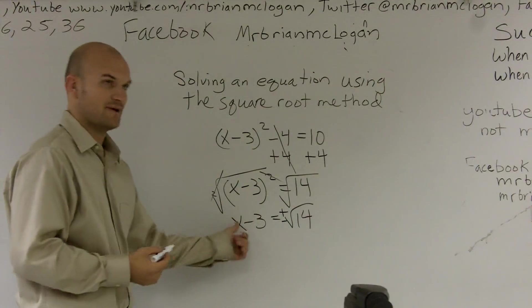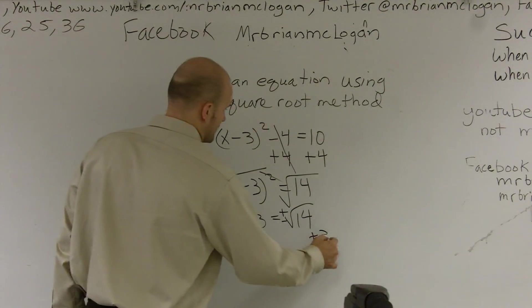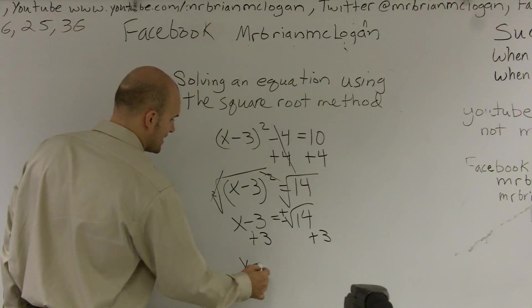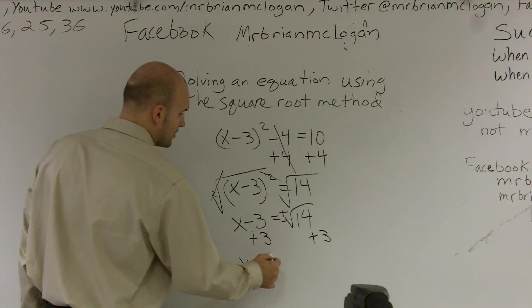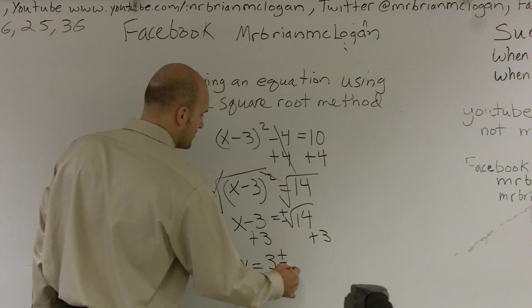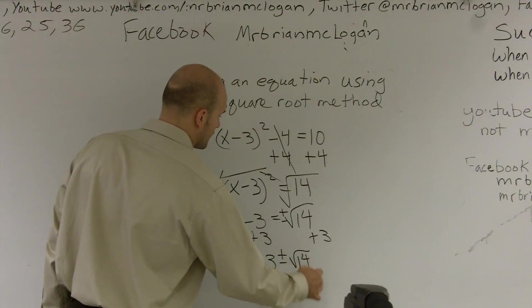Then, to get my variable by itself, I'll add 3. And so my final solution is x equals 3 plus or minus the square root of 14.